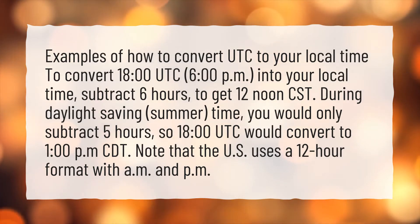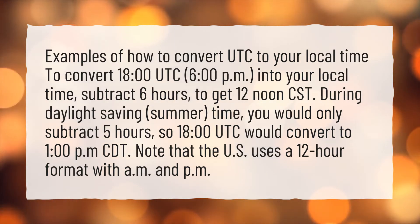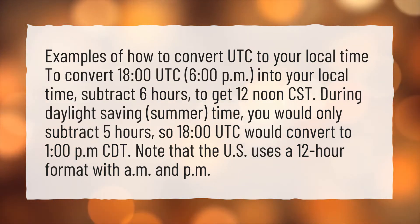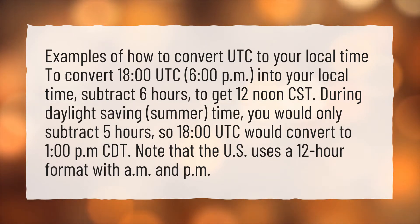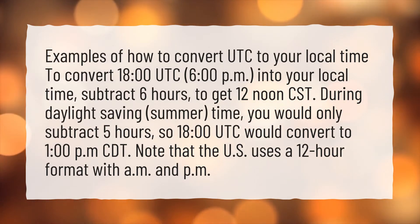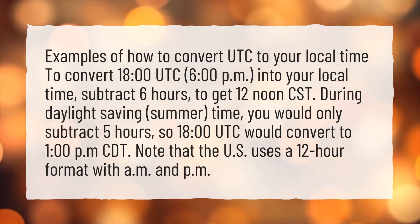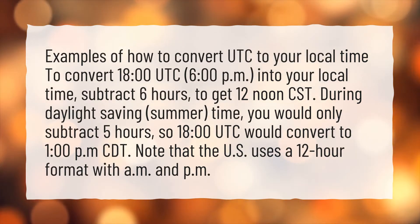During daylight saving summer time, you would only subtract 5 hours, so 1800 coordinated universal time would convert to 1 o'clock p.m. CDT. Note that the US uses a 12-hour format with a.m. and p.m.